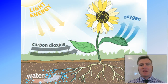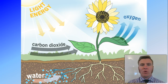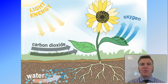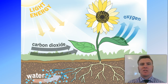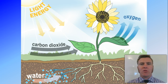Photosynthesis is something that is covered at all levels of science, so by now you should know that the basic reaction is that we have carbon dioxide absorbed by the leaves, water absorbed from the roots, in the presence of light energy and the enzyme chlorophyll in the chloroplasts. This produces oxygen as a byproduct which is let out of the leaves, as well as glucose which stays in the plant and the plant uses around its body for growth and whatnot.